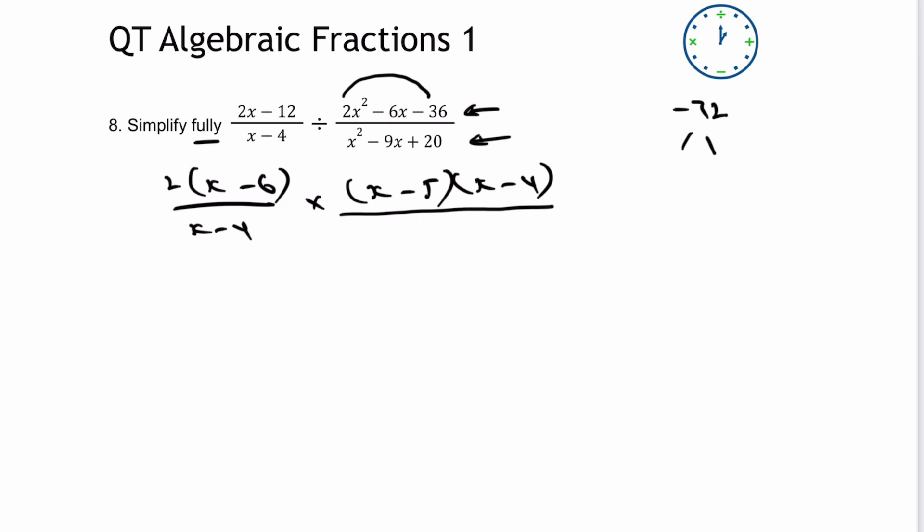And then I want two numbers that when I multiply them together make minus 72, and when I add them together make minus 6. And those two numbers are going to be minus 12 and plus 6.